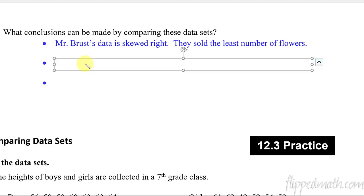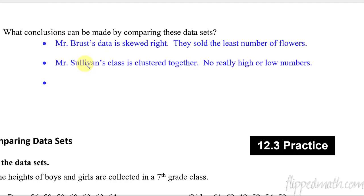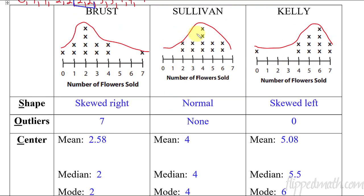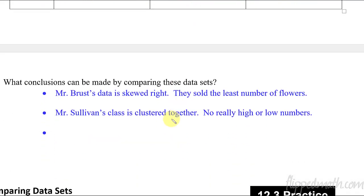So what's another conclusion? I wrote down a few. Mr. Sullivan's class is all clustered together. So they don't really have any high numbers or low numbers. There's no outliers. So let me scroll back up here and show you. So Mr. Sullivan, yeah, they're all kind of centrally located together here, hovering around the number four back and forth. There's no really big, no really high numbers.